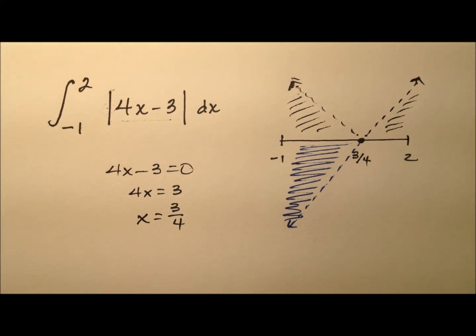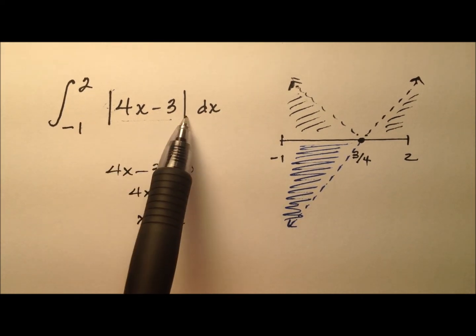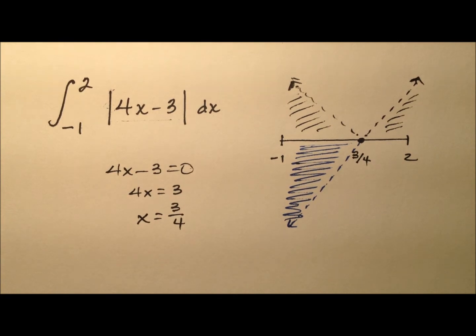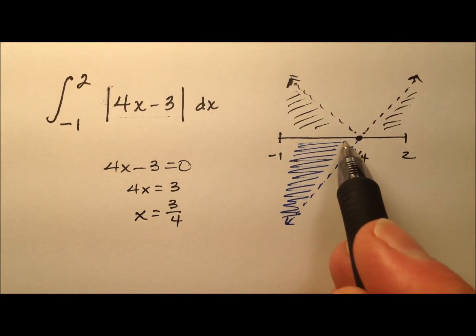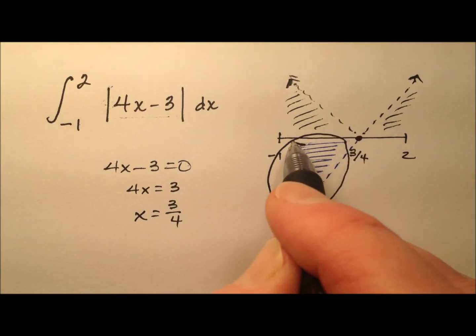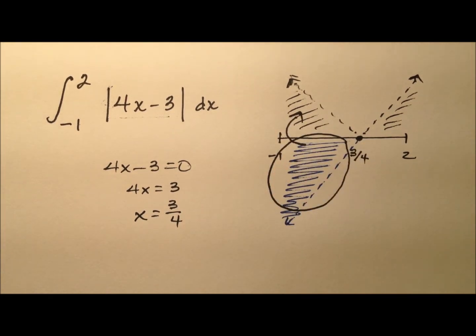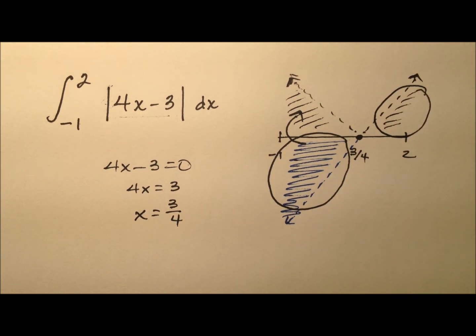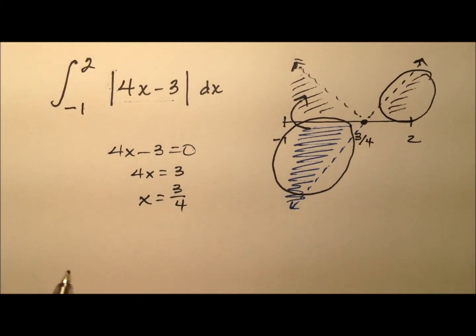So what we're going to do is break this absolute value integral up into two separate integrals. One that's going to take into account this negative value that was reflected over the x-axis, and then the other that will just take this region right here all by itself. So let's go ahead and write these two integrals and what that'll look like here.